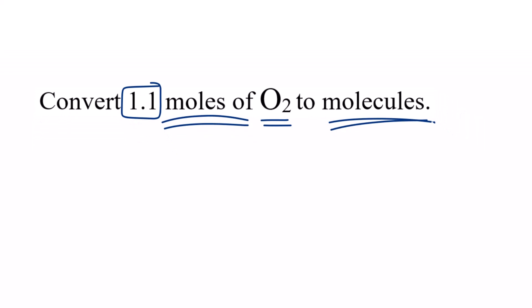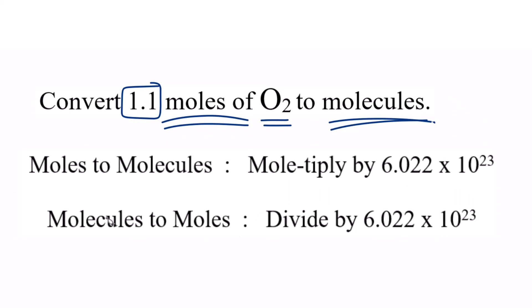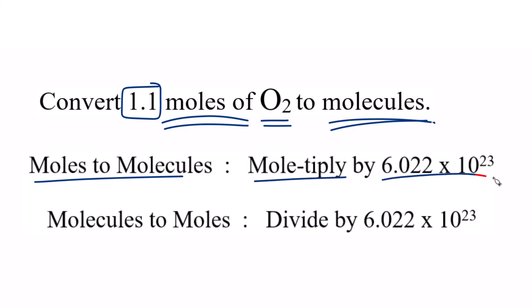So it's really helpful to think when we're going from moles to molecules, what we're going to do. Moles to molecules, we multiply by Avogadro's number. So kind of a mnemonic here to help you remember that. Moles to molecules, we multiply by 6.02 times 10 to the 23rd. If you're going the other way, from molecules to moles, you just do the reverse. You divide by Avogadro's number.